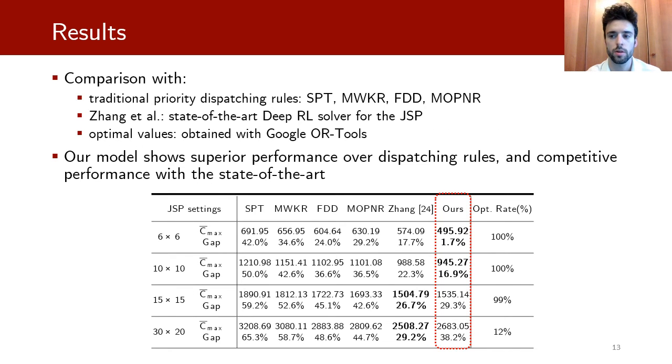Now we compare the results of our approach to some of the most used traditional dispatching rules. Also we compare the results with one state-of-the-art deep reinforcement learning solver. From the table you can see that our model is able to get superior performance over all the dispatching rules and shows competitive performance with the state-of-the-art.